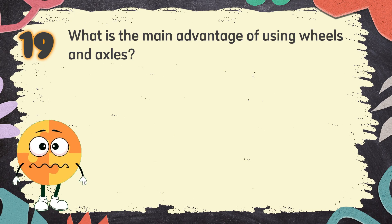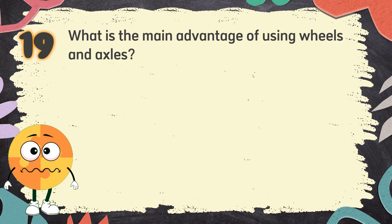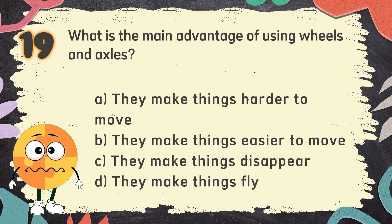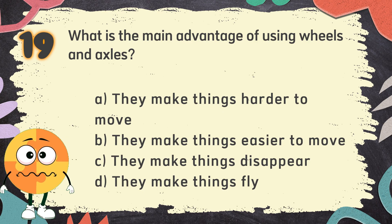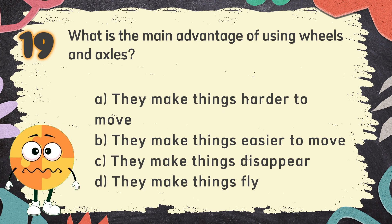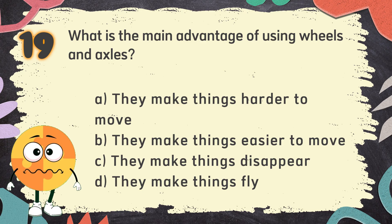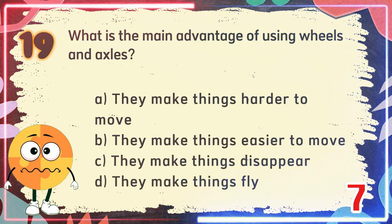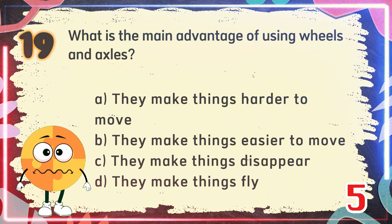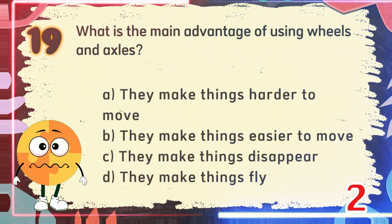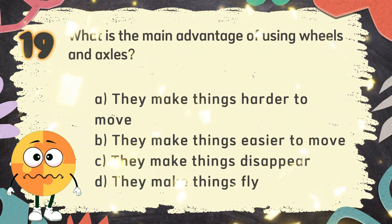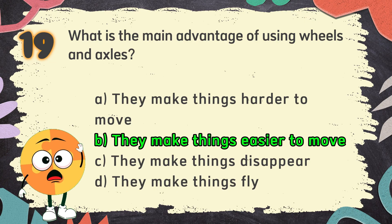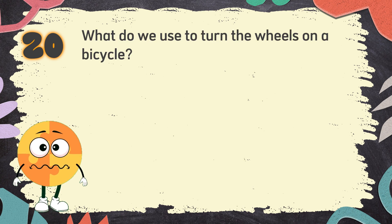Number 19. What is the main advantage of using wheels and axles? The choices are: A. They make things harder to move. B. They make things easier to move. C. They make things disappear. D. They make things fly. The correct answer is B. They make things easier to move.